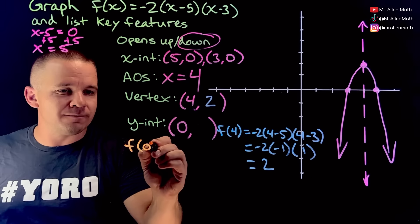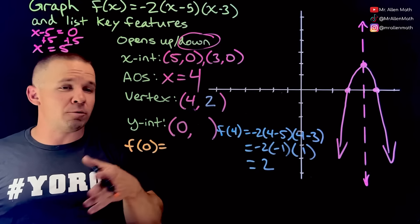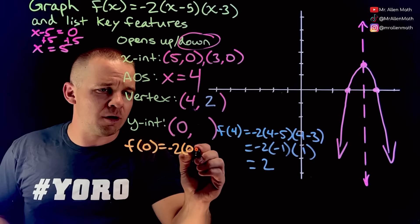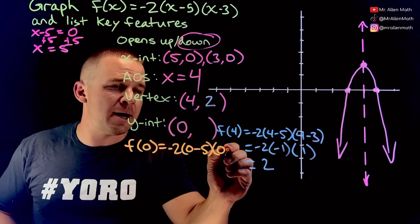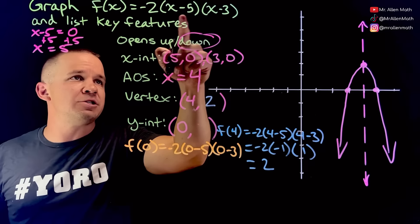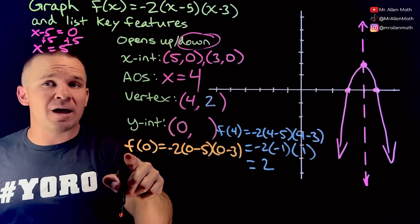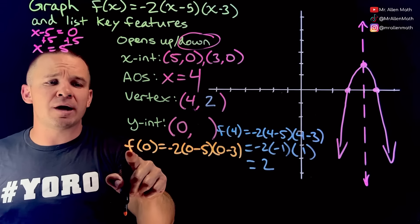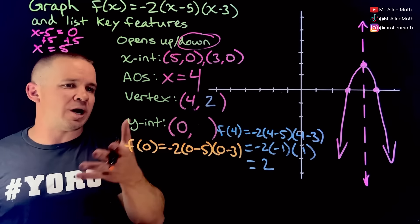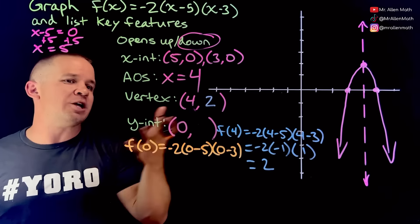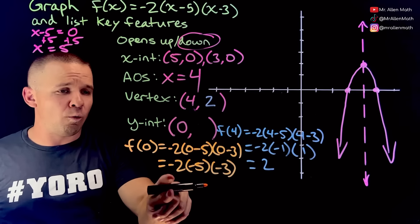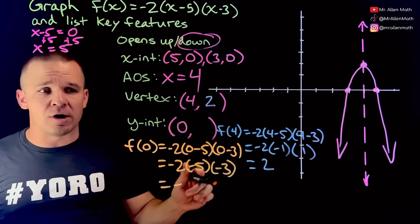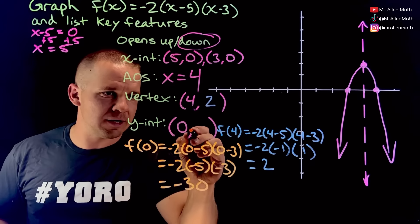So f of zero: in factored form and vertex form, getting the y-intercept takes a little bit of work. I substitute in zero for both x's: zero minus five is negative five, and zero minus three is negative three. So I've got negative two times negative five times negative three. Three negatives: negative times negative is positive, times negative is negative overall. Two times five is ten, times three is thirty, so the answer is negative thirty. My y-intercept is zero comma negative thirty.